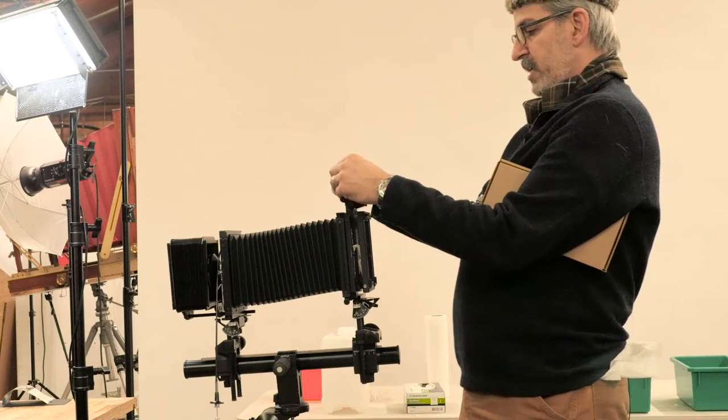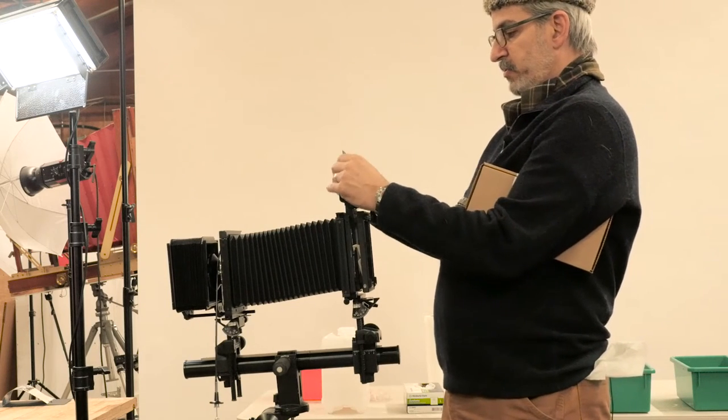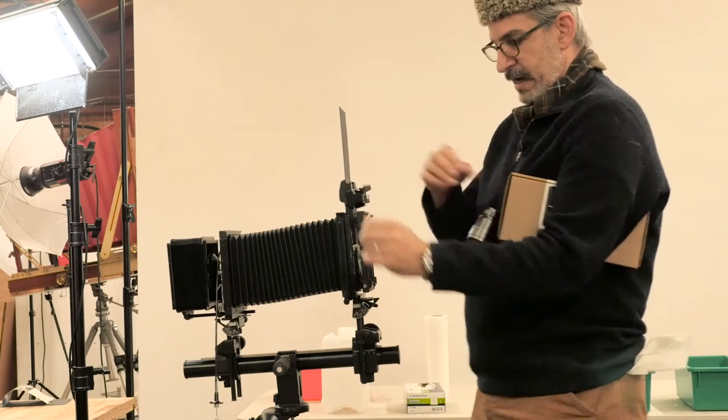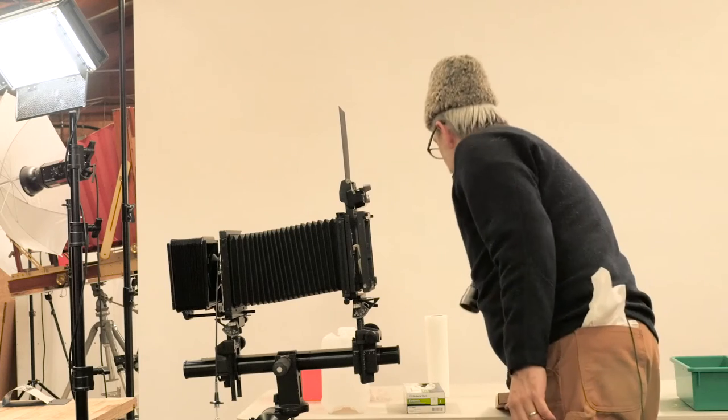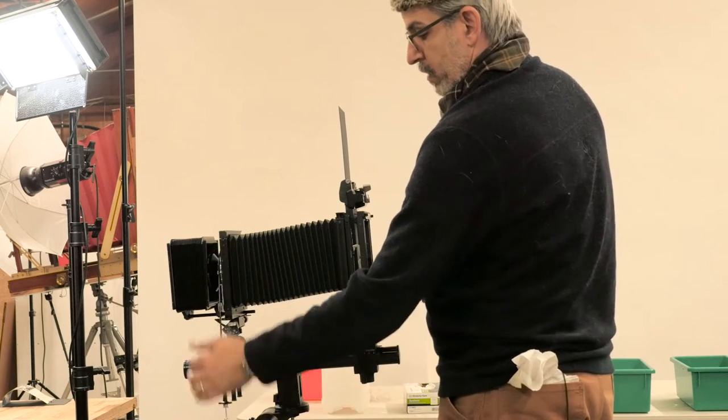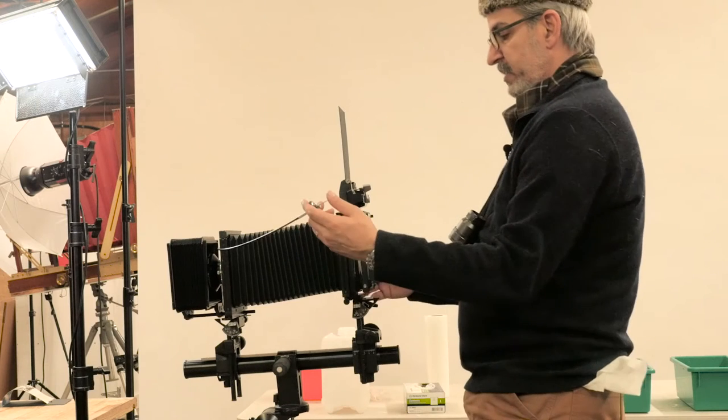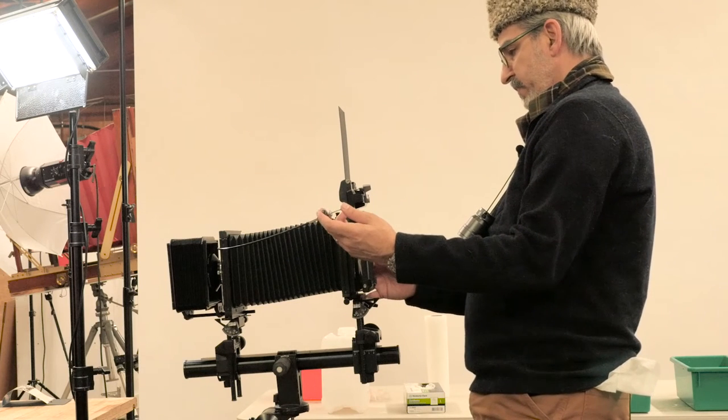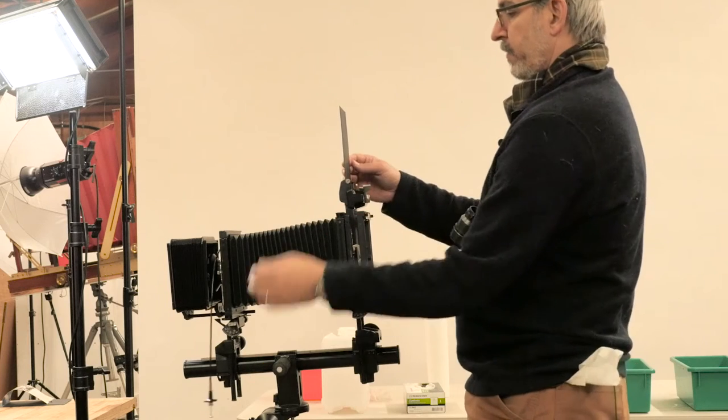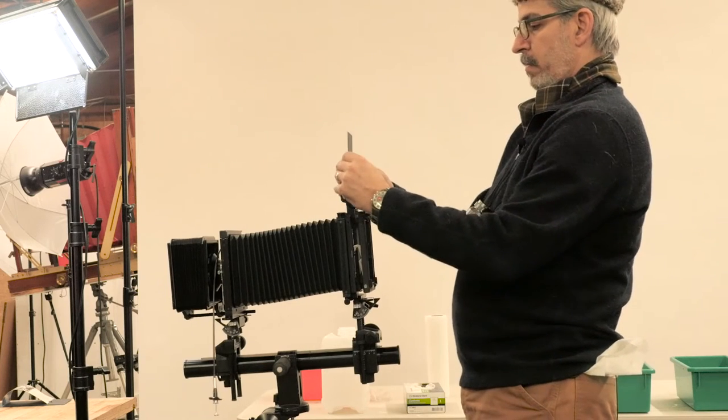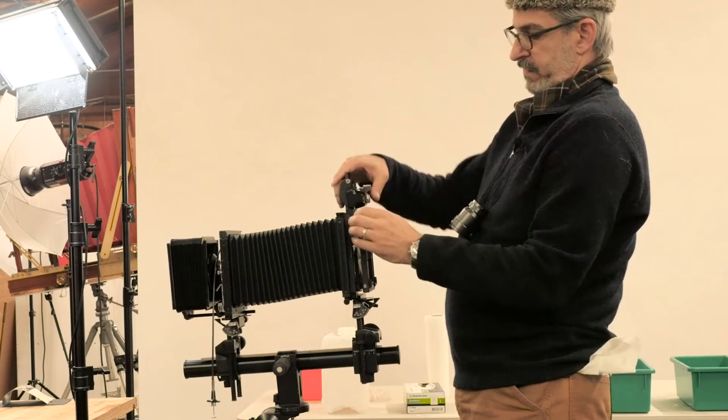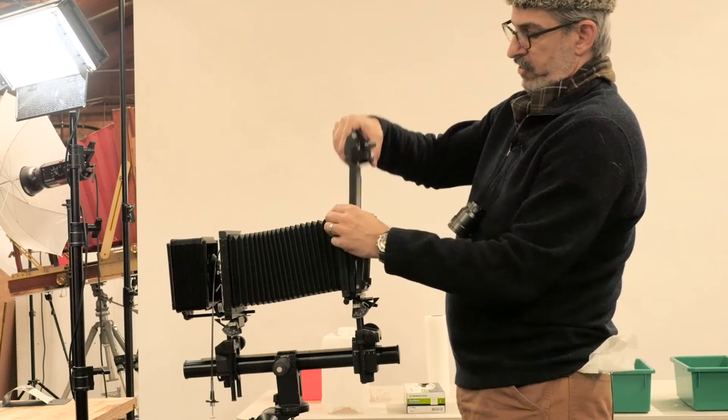Now I withdraw the sleeve to expose the negative all the way to the stop. I've already set the exposure of my camera and focused. I replace the sleeve and then withdraw the holder.